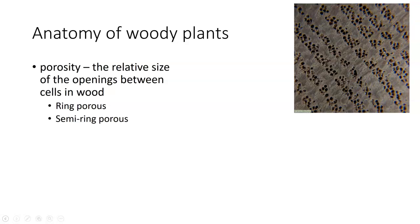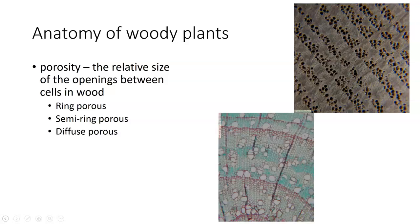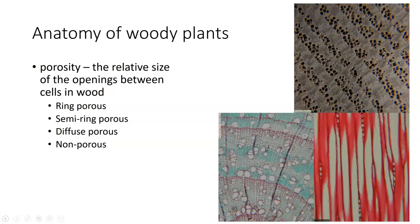We can have semi-porous wood, meaning pores scattered in different directions. We can have diffuse porous wood, which means that rather than having pores along a ring, they are in a more scattered manner throughout — that's what this slide shows. Then we also have ring non-porous wood. Non-porous wood is found in gymnosperms, and porosity becomes very important when we study the anatomy of wood.